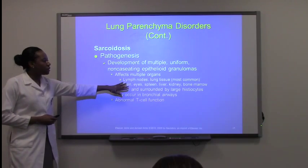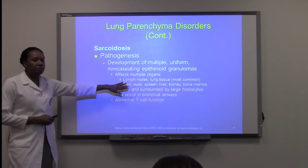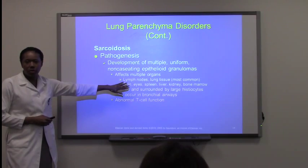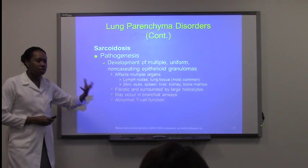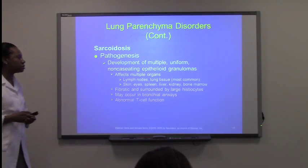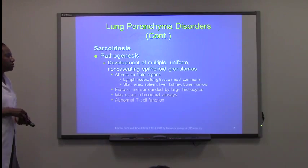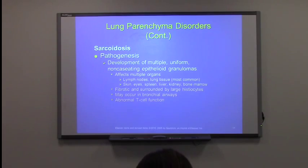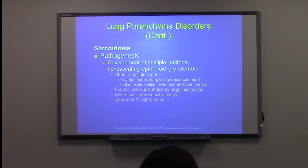The organs normally affected include not just the lung tissue but also the lymph nodes, nose, spleen, liver, and so forth. These patients also have an abnormal T-cell function.